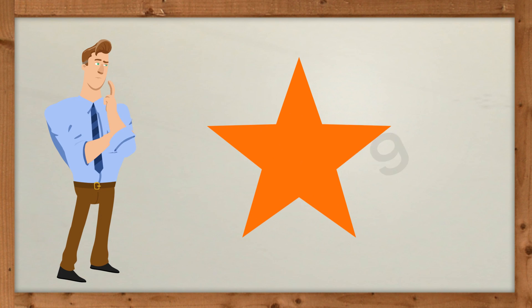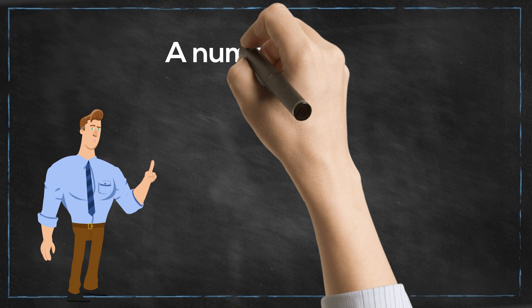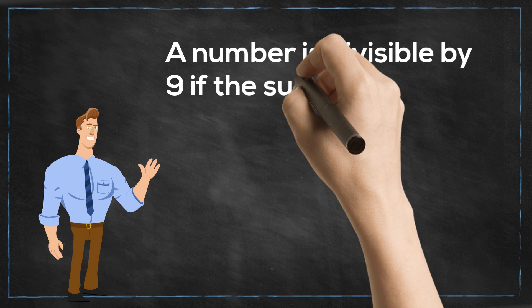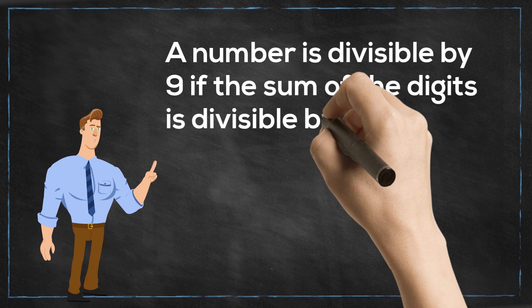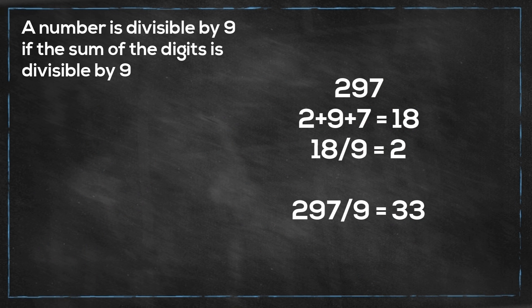Let's look at 9. A number is divisible by 9 if the sum of the digits is divisible by 9. For example, 297 — 2 plus 9 plus 7 is 18. 18 is divisible by 9, therefore 297 is divisible by 9.